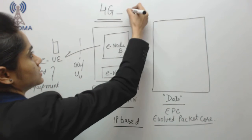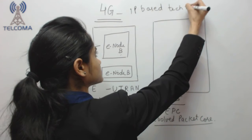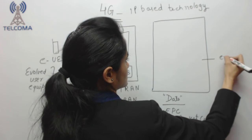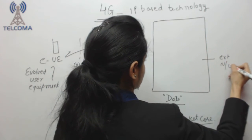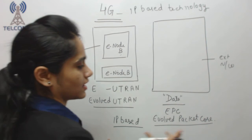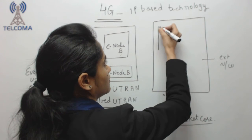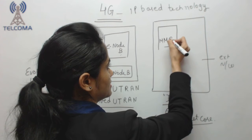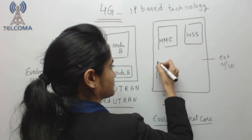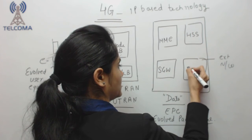So in basic 4G architecture we have EUE, we have RAN part and EPC which we require in each and every network architecture. If we talk about the entities, so we have MME, we have HSS, serving gateway, we have PDN gateway.